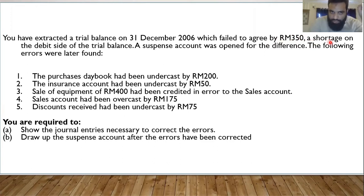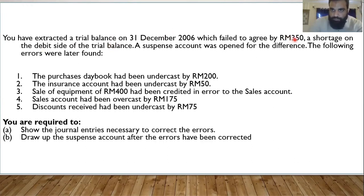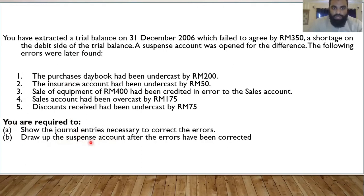The question states there is a shortage on the debit side of the trial balance, meaning the debit side is smaller and the credit side is bigger. When you read there is a shortage on the debit side, this should automatically tell you that the suspense account will have a debit balance. So with this first sentence, we have decided that 350 is the balance and it will appear on the debit side of the suspense account. A suspense account was then opened, and the following errors were later found — five errors in total. The requirements are journal entries and preparation of the suspense account. If you can pass the journal entries, the suspense account is just copy-paste.